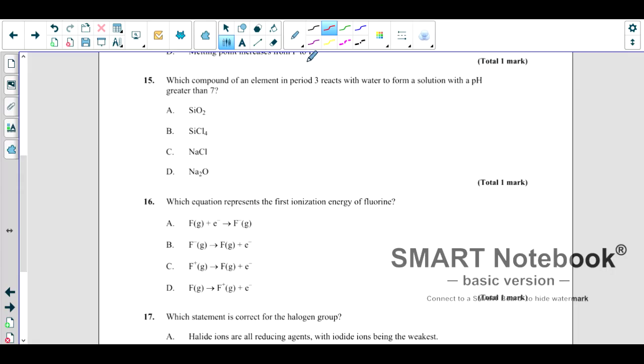Hello everyone, welcome to this video. Sorry, because of some technical issues that video was disconnected, so we can continue from the question where we left from question number 15. Which compounds of an element in period 3 reacts with water to form solution with a pH greater than 7?